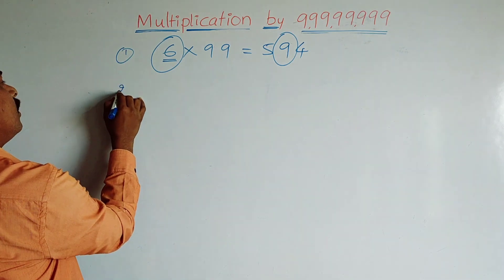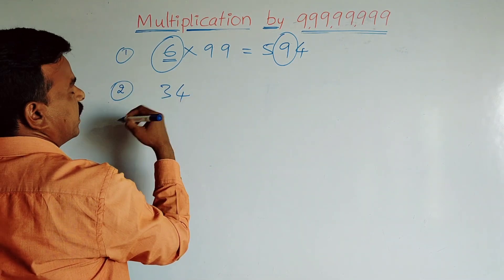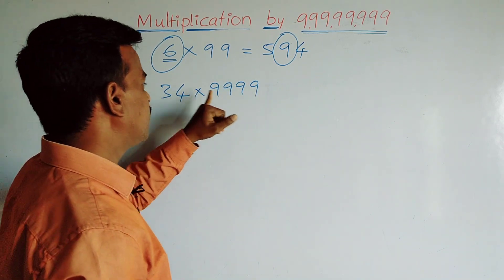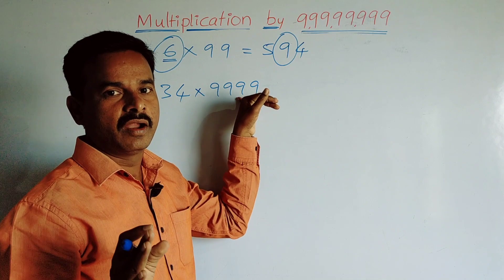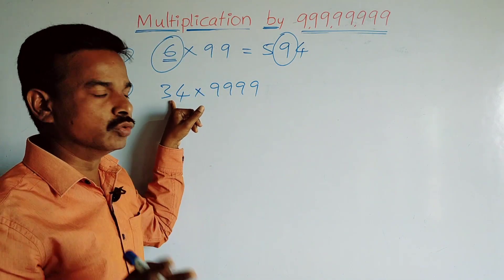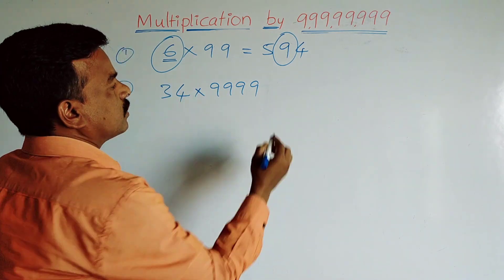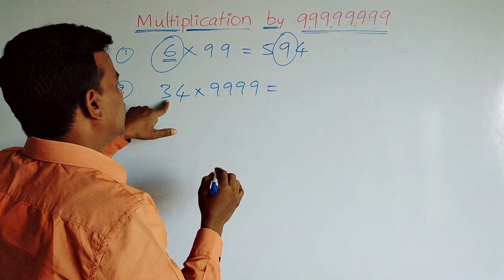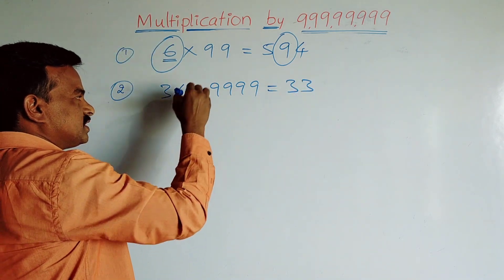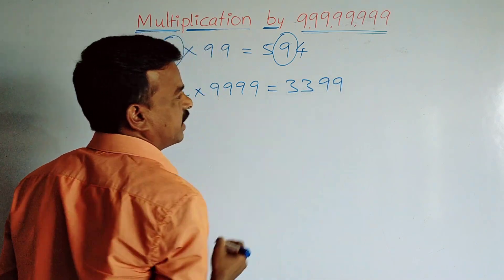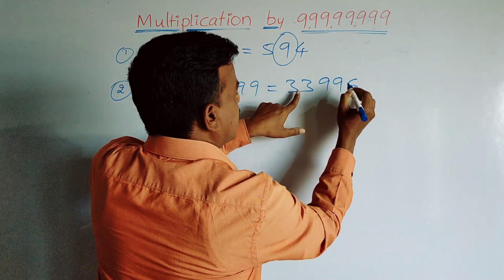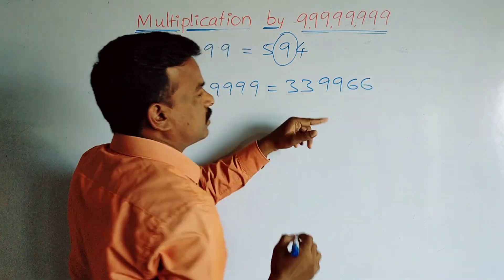One more example: 34 × 9999. The number of nines in multiplier is 4, and the number of digits in multiplicand is 2 — so 4 is double of 2. Subtract 1 from 34: 34 minus 1 equals 33. There are 2 digits, so we write two nines in the middle: 99. Then: 9 minus 3 equals 6, and 9 minus 3 equals 6. So the answer is 339966.